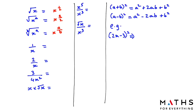For 1 over x: bring the x up to the numerator and the power becomes negative. Since there is no written power, there is a 1, so we get x to the power of negative 1. For 2 over x, the 2 stays as is and x becomes x to the power of negative 1. For 3 over 4x squared, the numbers 3 over 4 stay unchanged and x squared becomes x to the power of negative 2.